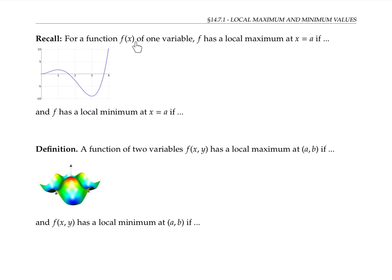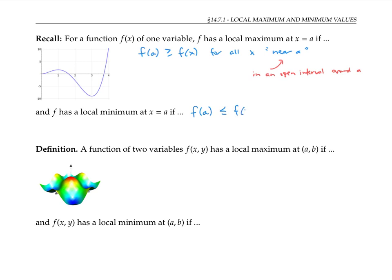Recall that for a function f of x of one variable, we say that f has a local maximum at x equals a if f of a is bigger than or equal to f of x for all x near a, where near a means more precisely in an open interval around a. We say that f has a local minimum at x equals a if f of a is less than or equal to f of x for all x near a. So in this example, our function has a local maximum at x equals one, and a local minimum at x equals three.